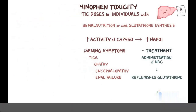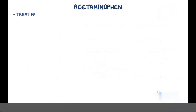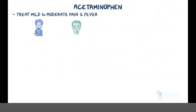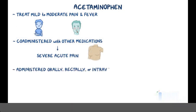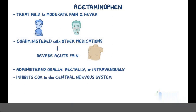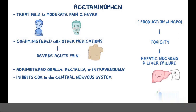As a quick recap: Acetaminophen, also known as paracetamol, is mainly used to treat mild to moderate pain and fever, but it can also be co-administered with other medications to treat severe acute pain. It is administered orally, rectally, or intravenously, and works by reversibly inhibiting COX in the central nervous system. Finally, acetaminophen toxicity is caused by an increased production of NAPQI, which results in hepatic necrosis and liver failure, and it's treated by administration of N-acetylcysteine.